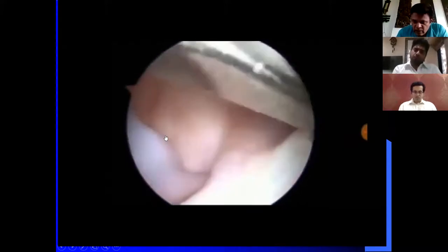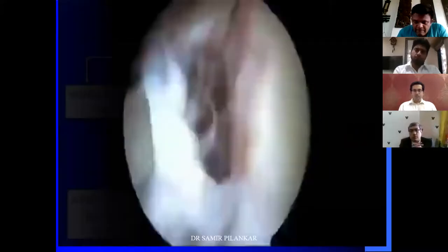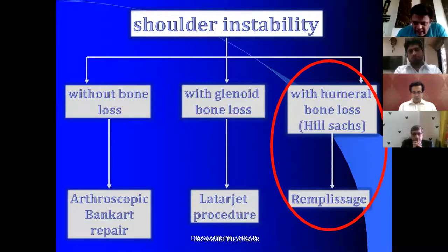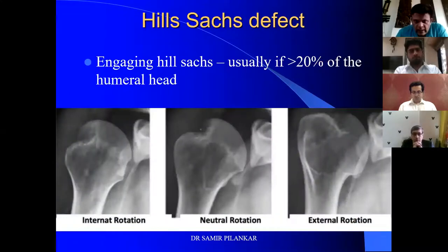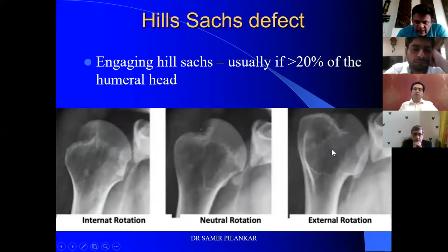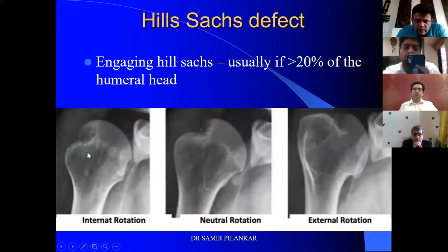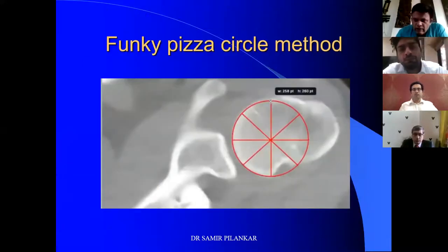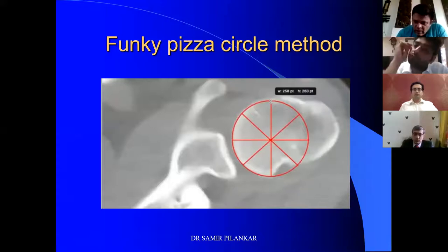For humeral bone loss — the Hill-Sachs — engaging Hill-Sachs is usually more than 20% of the humeral head, and if seen even in external rotation, it is more significant. It is usually visible in internal rotation because it is posterosuperior. I use the funky pizza circle method to quantify Hill-Sachs bone loss — simply superimpose a circle on it to find how much bone is lost. Remplissage comes from the French term meaning 'to fill.' When there is an engaging Hill-Sachs with more than 20% humeral defect, you fill the defect with the posterior capsule and the infraspinatus with an anchor.